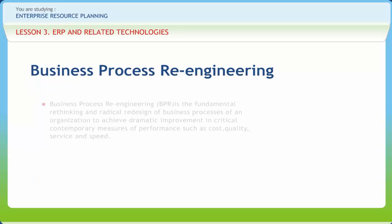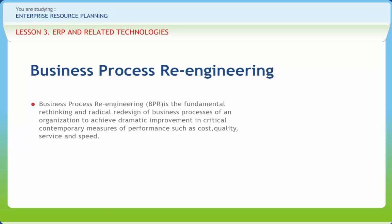Business process re-engineering, BPR, is the fundamental rethinking and radical redesign of business processes of an organization to achieve dramatic improvement in critical contemporary measures of performance such as cost, quality, service and speed. In simple terms, the process of examining current processes and redesigning those processes to increase the efficiency and effectiveness of an organization is called BPR.